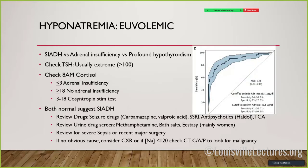Once we've ruled out other causes and the patient is euvolemic, it's either SIADH, profound hypothyroidism (cases I've seen had TSH around 200), or adrenal insufficiency. 86 to 88 percent of people with adrenal insufficiency have hyponatremia - it's one of the most common findings. So for a euvolemic hyponatremic patient, check a TSH and an 8 a.m. cortisol.